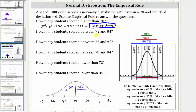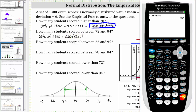Next, how many students scored between 72 and 84? Notice 72 and 84 are both one standard deviation from the mean, and from the empirical rule, approximately 68% of the data falls within plus or minus one standard deviation from the mean. So 68% of the students scored between 72 and 84. The number of students is 68% of 1,300, which is 0.68 times 1,300, equaling 884 students.